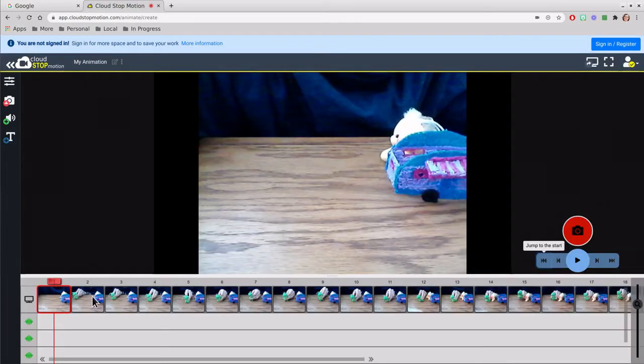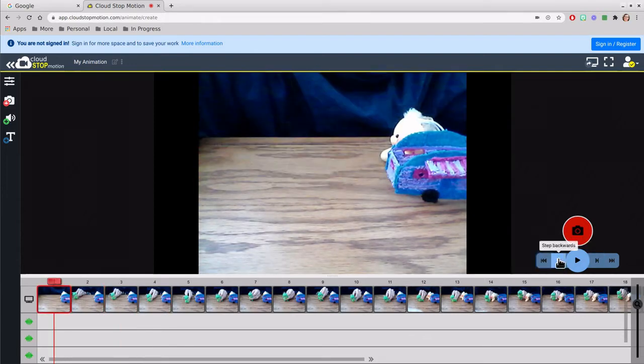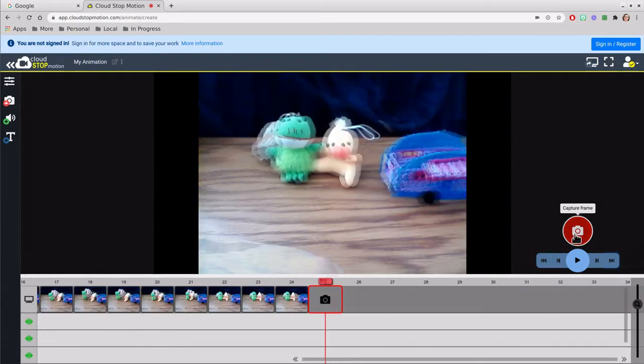On the bottom it shows all our pictures in a row kind of like a big long storyboard. On the right are our controls. We can go backward and forward, play our video so far, and use the red camera button to take the next picture.